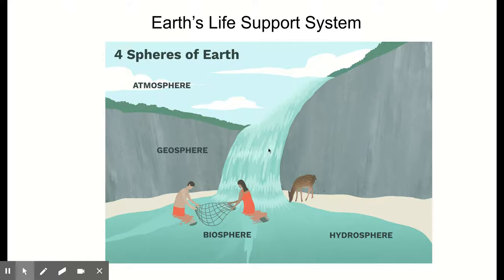The hydrosphere consists of all of the water on or near the earth's surface. We've got liquid water on the surface, groundwater underground, frozen water as ice in polar ice, icebergs, glaciers, ice in frozen soil layers called permafrost, and also water vapor up in the atmosphere — all the water that's on earth.